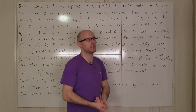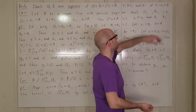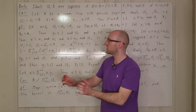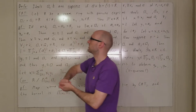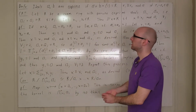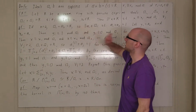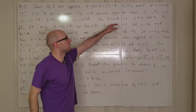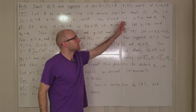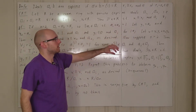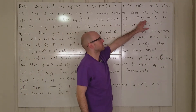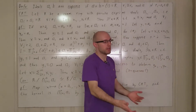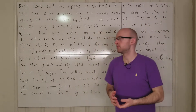We take a commutative ring with a finite collection of ideals a1 through an which are pairwise co-prime, so for any two distinct ideals ai and aj, ai plus aj is the whole ring r. Given fixed elements x1 through xn in r, there exists a unique element x in r which is congruent to xj mod aj for every j between 1 and n.